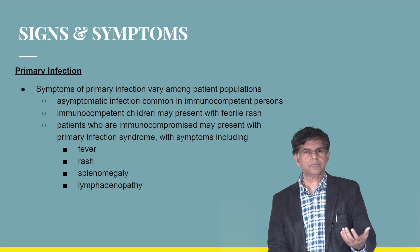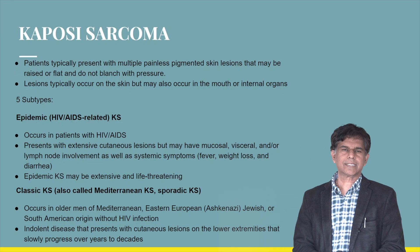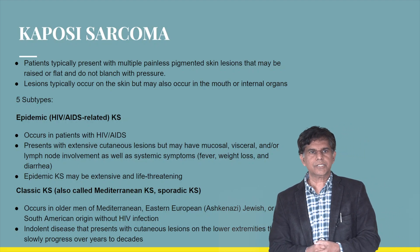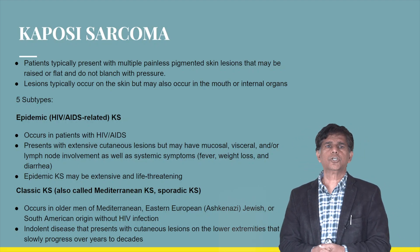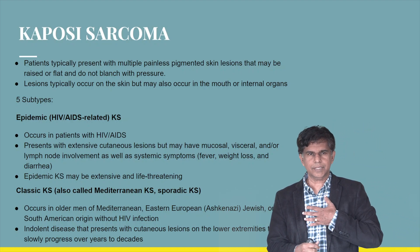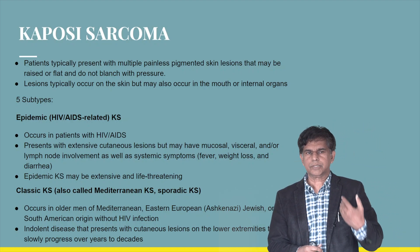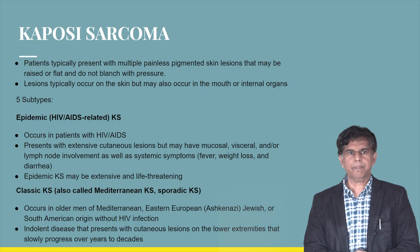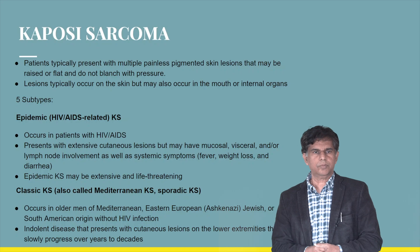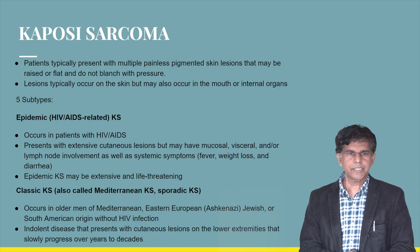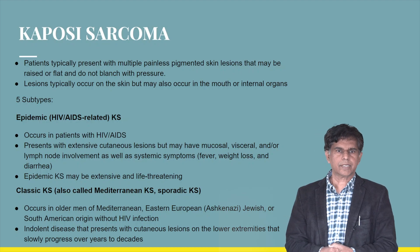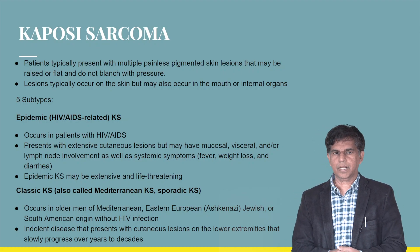Kaposi Sarcoma typically presents with multiple painless pigmented lesions — the classic Kaposi lesion — which may be raised. Lesions typically occur in the skin but may also occur in the mouth and internal organs, including the GI tract, sometimes causing GI bleeding. Epidemic or AIDS-associated Kaposi Sarcoma occurs in patients with HIV and AIDS, presenting with extensive cutaneous lesions that can be very extensive and life-threatening.